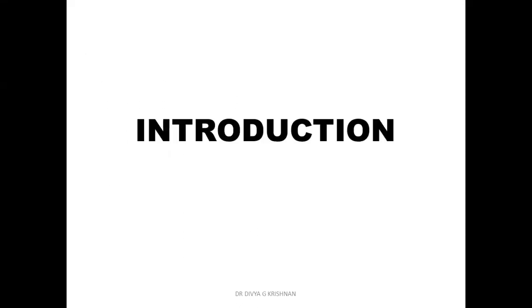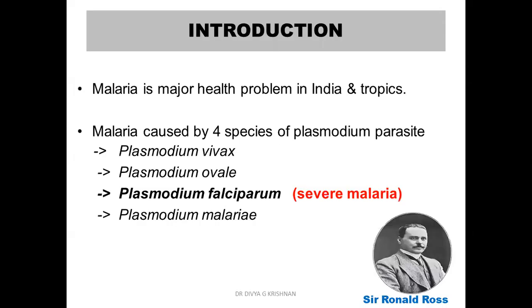Before we go into the core areas of today, we'll have a brief introduction to malaria. Malaria is a major health problem in India and the tropics, and malaria is caused by four species of Plasmodium parasite: Plasmodium vivax, Plasmodium ovale, Plasmodium falciparum, and Plasmodium malariae. Of these, the most severe malaria is caused by Plasmodium falciparum.